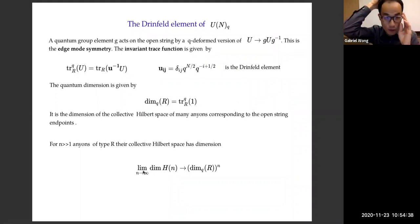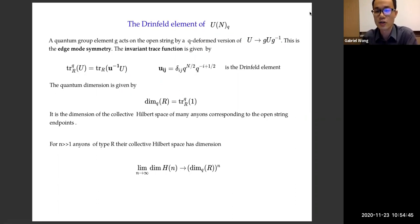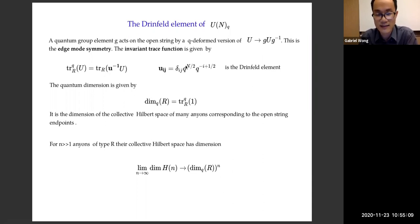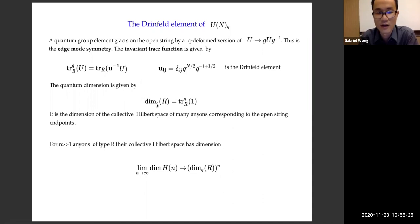Now we define the Drinfeld element of this quantum group. An element of the quantum group G acts on the open string by the Q-deformed version of conjugation — this is the edge-mode symmetry. It's a natural generalization of the action of U(N) on itself. The invariant trace function is given by the quantum trace: the ordinary trace in some representation R, but with an insertion of an operator — little u. This u, given explicitly in the U(N) case as a diagonal matrix with certain phases, is an object defined entirely by quantum group data. Its purpose is so that when you trace the identity, you get the quantum dimension of U(N)_Q.